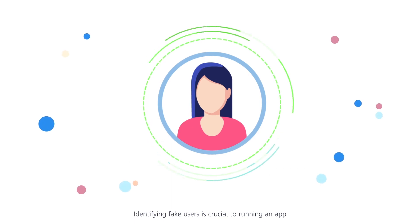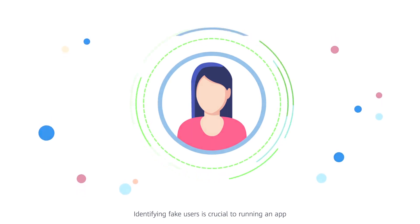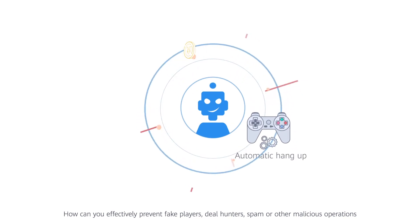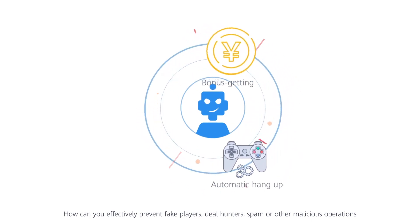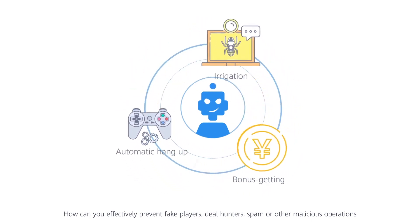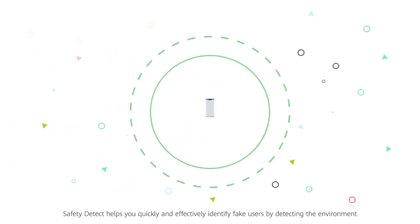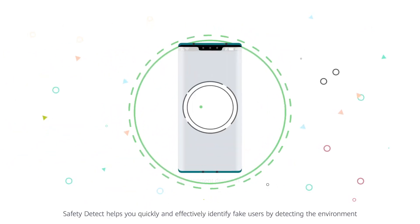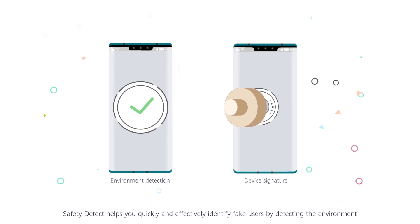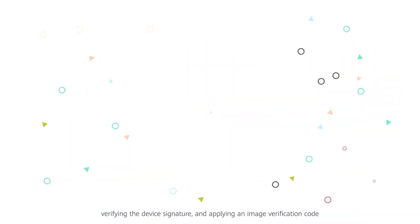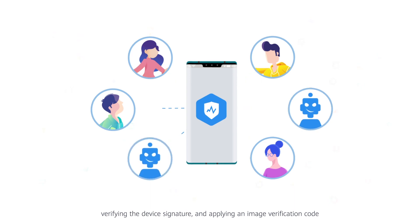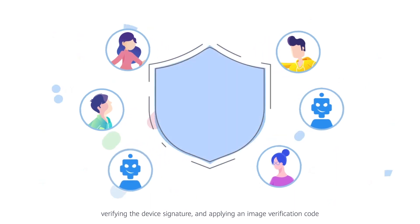Identifying fake users is crucial to running an app. How can you effectively prevent fake players, deal hunters, spam, or other malicious operations? Safety Detect helps you quickly and effectively identify fake users by detecting the environment, verifying the device signature, and applying an image verification code.